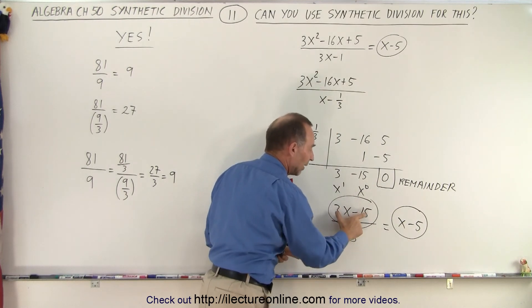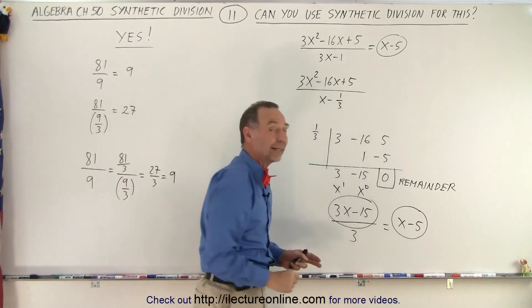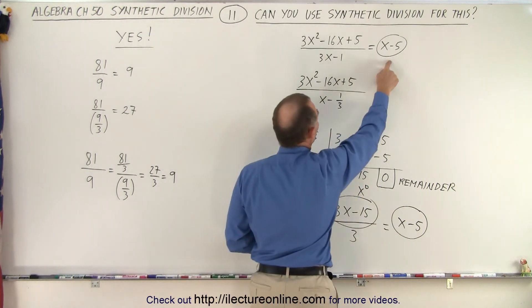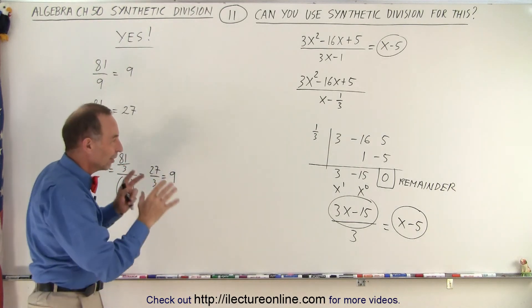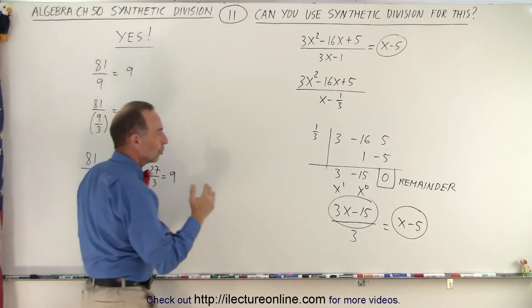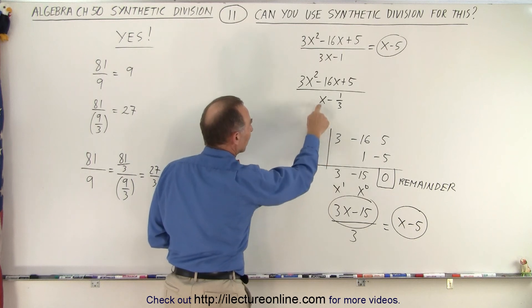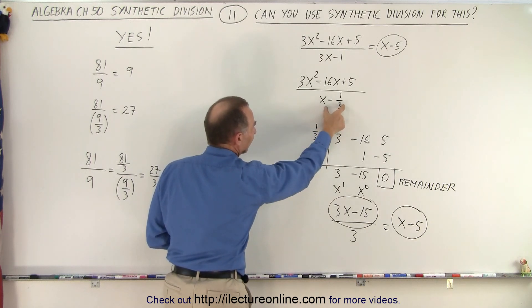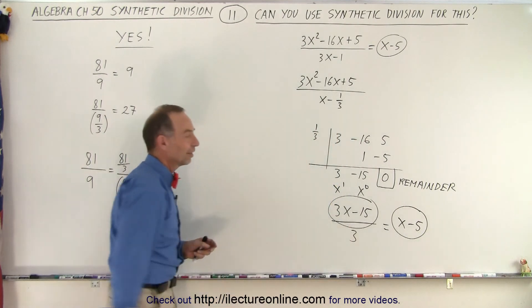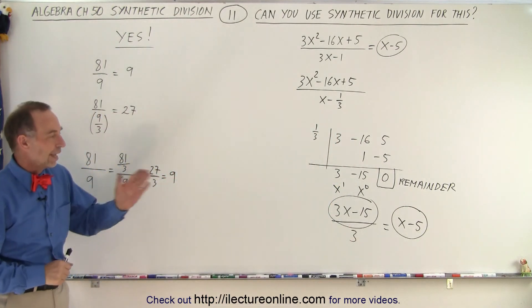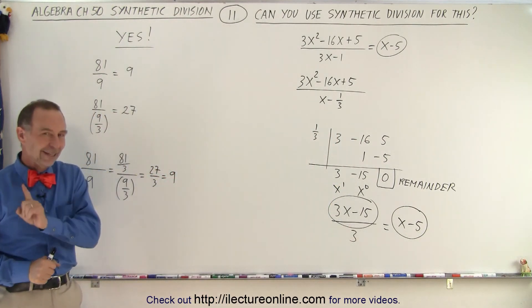And so therefore, I take the answer, divide it by 3, and I get the correct answer. And that's the answer associated with this division. Again, synthetic division works fantastically. You just have to be careful. Use the right rules. Here, we want an x in the front. Then take the negative of this number, which is the positive one-third, work through the process, divide the final answer by 3, and you get the correct answer. And that is how it's done.